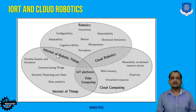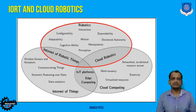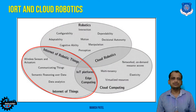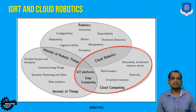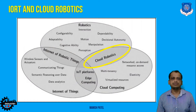Looking into the Venn diagram of different Industry 4.0 technologies: the characteristics of robotics include configurability, adaptability, and motion perception. The Internet of Things contributes networking capability and internet connectivity. Both combine with robotics to create the Internet of Robotic Things. Cloud computing adds virtualization techniques, elasticity, and tenancy — these merge with robotics to create cloud robotics.